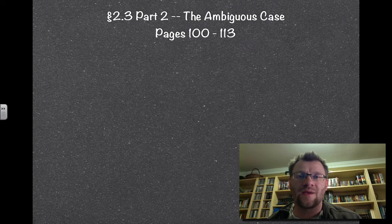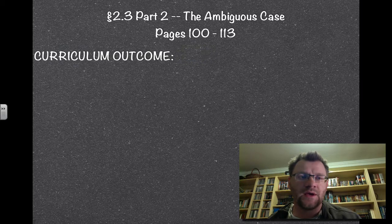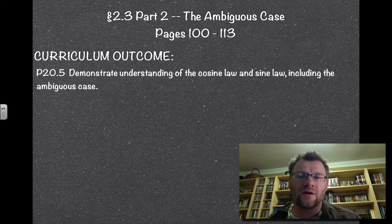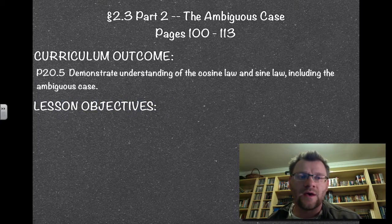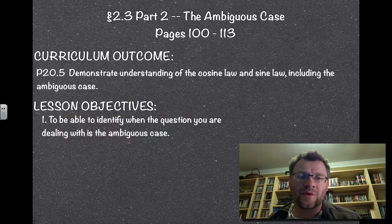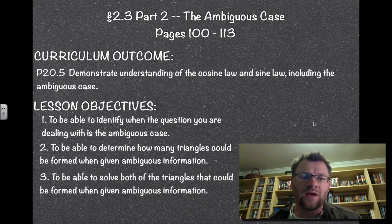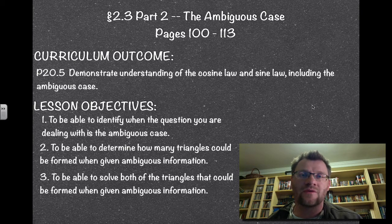2.3 part 2 is the ambiguous case, on pages 100 to 113, and we're looking at curriculum outcome 20.5 which says we need to demonstrate an understanding of the cosine law and sine law including the ambiguous case. Our lesson objectives: number one, to identify when a question is the ambiguous case; number two, to determine how many triangles could be formed; and number three, to solve both triangles that could be formed.